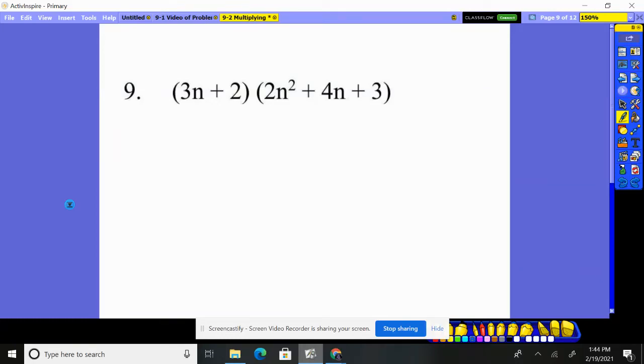Number nine. We have a binomial, two pieces, times this trinomial, three pieces. So two pieces times three pieces gives six pieces total. I'll multiply 3n through each of these pieces, and then I'm going to do the 2 through each of those pieces, which will give us six pieces. Then we'll combine what can be combined.